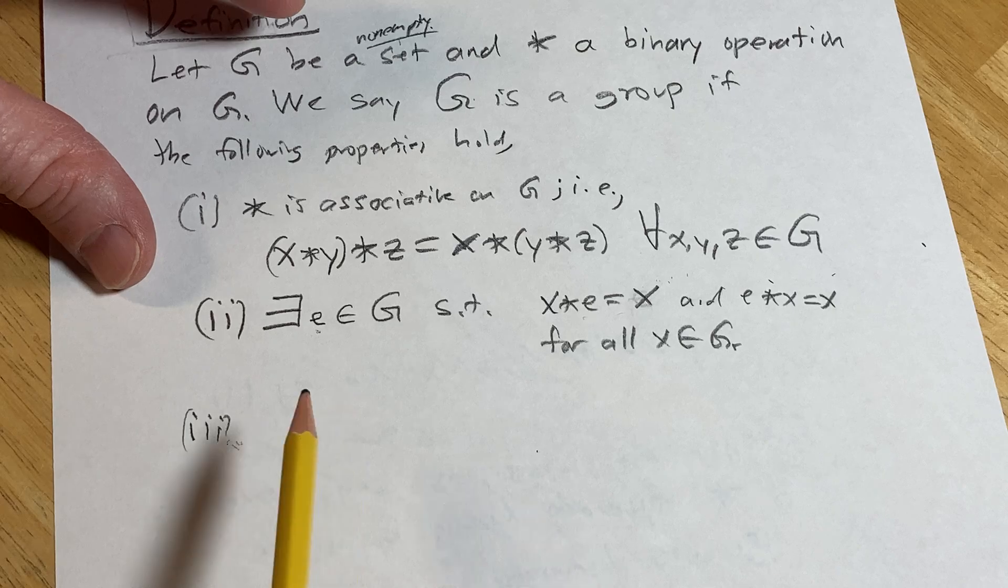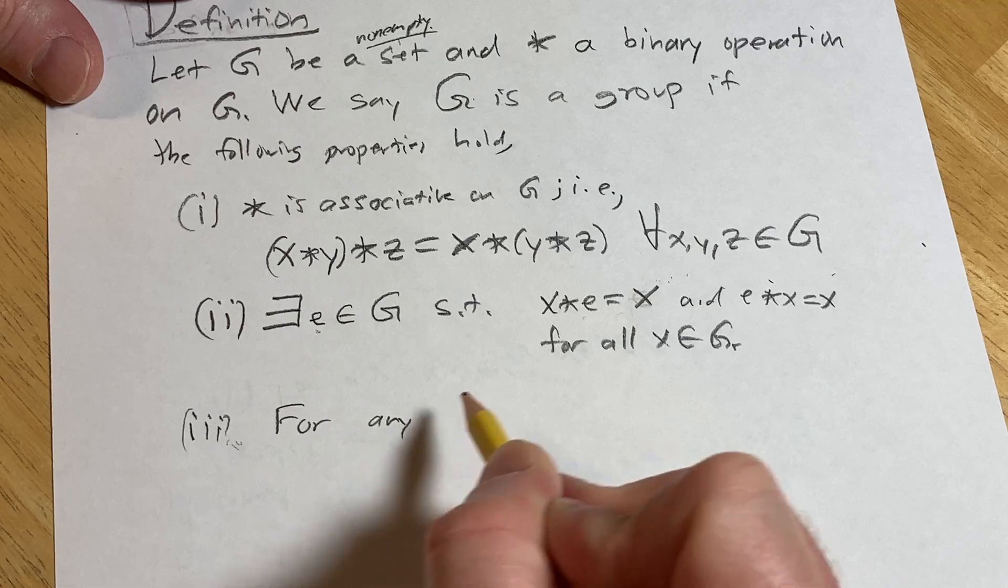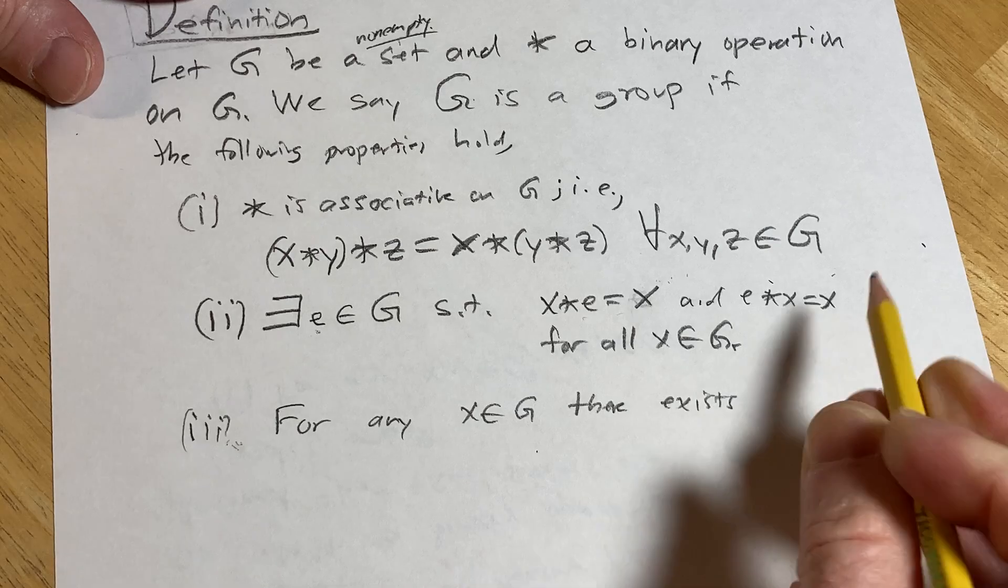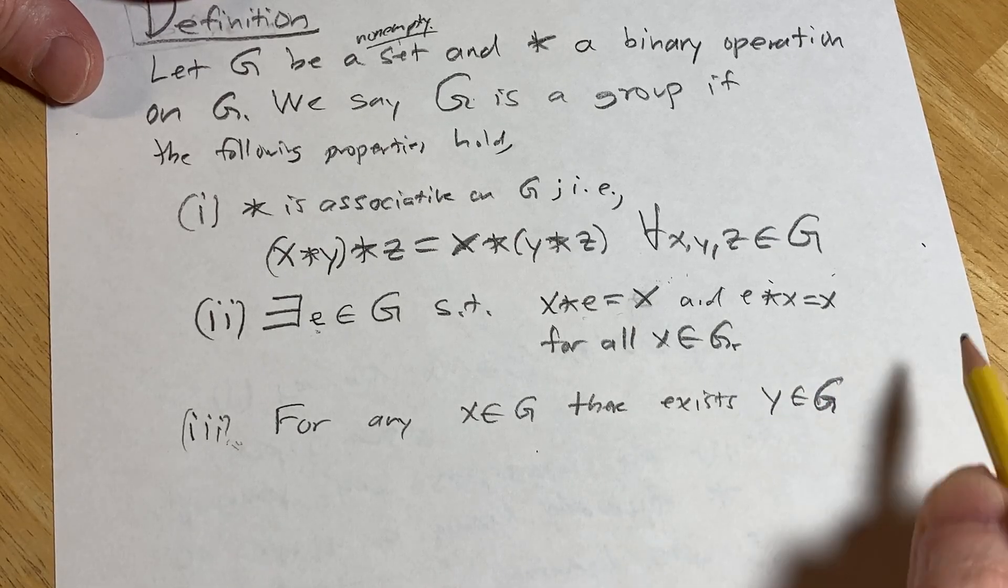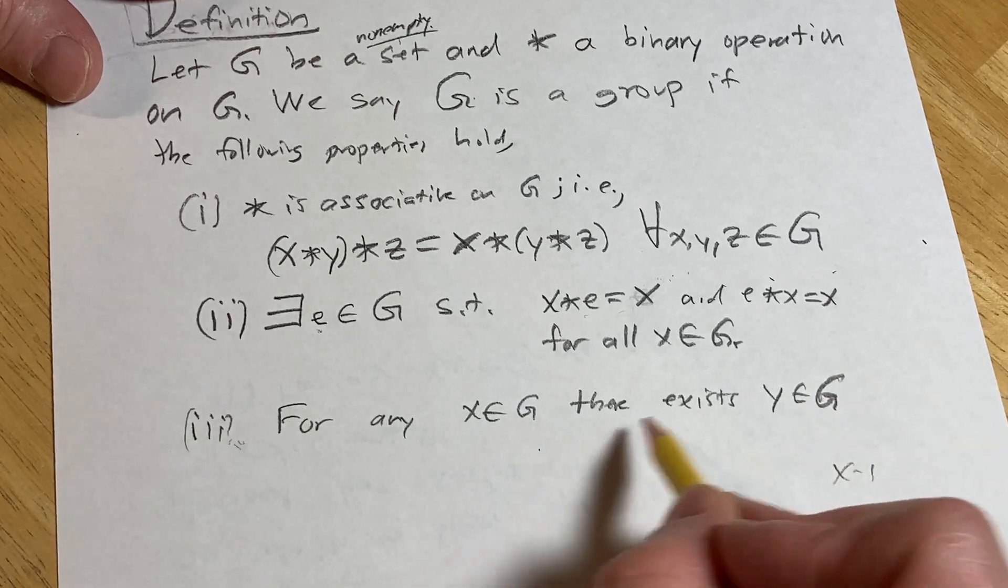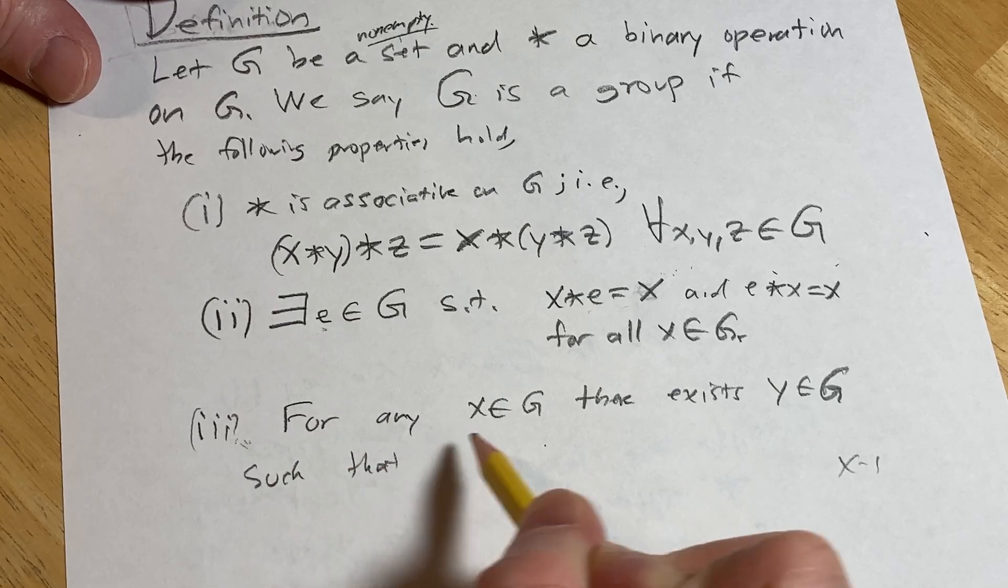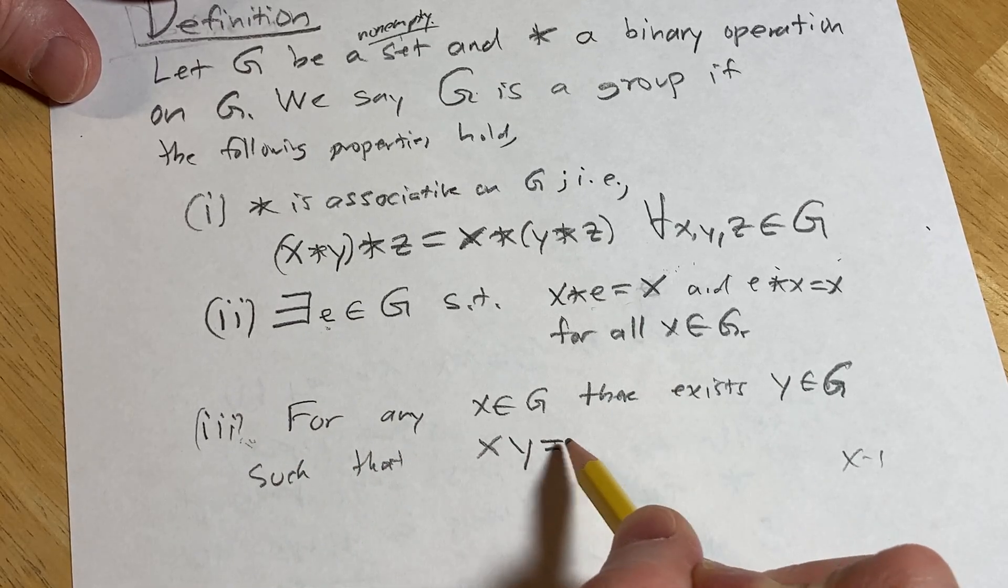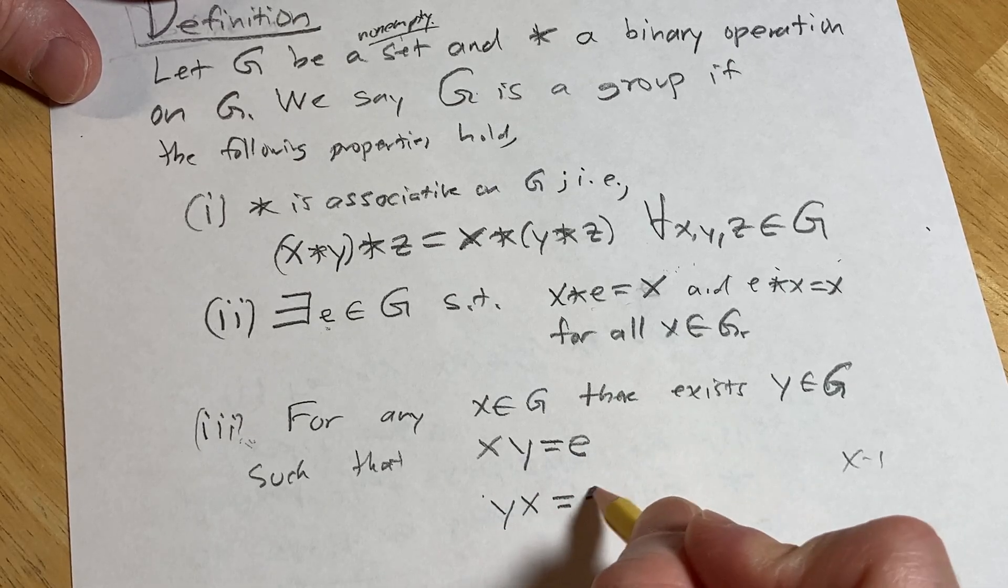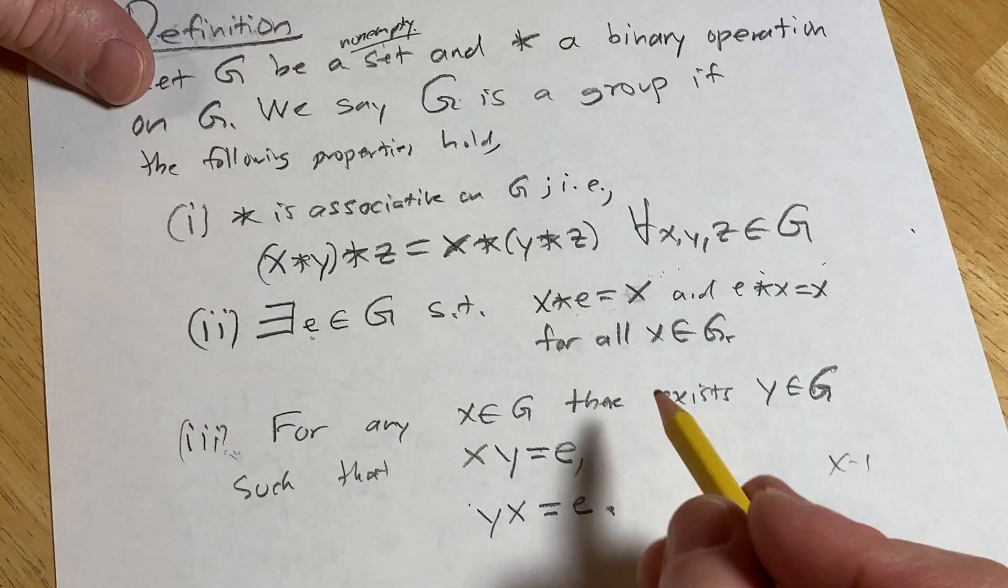Three. The existence of inverses. For any x in G, there exists y in G such that if you take x and you multiply it by y on the right, you're going to get the identity element. And if you take x and you multiply it by y on the left, you're also going to get the identity element. So both of these conditions hold. This is the existence of inverses.